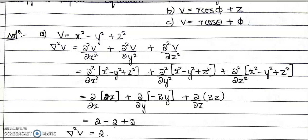Since del²V = 2, which is not equal to 0, this potential field does not satisfy the Laplace equation. For a potential field to satisfy Laplace equation, we need del²V = 0.